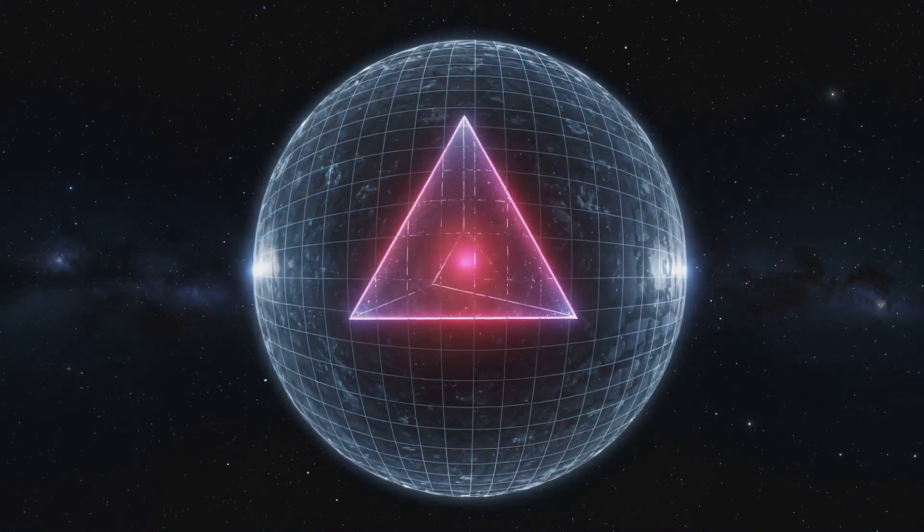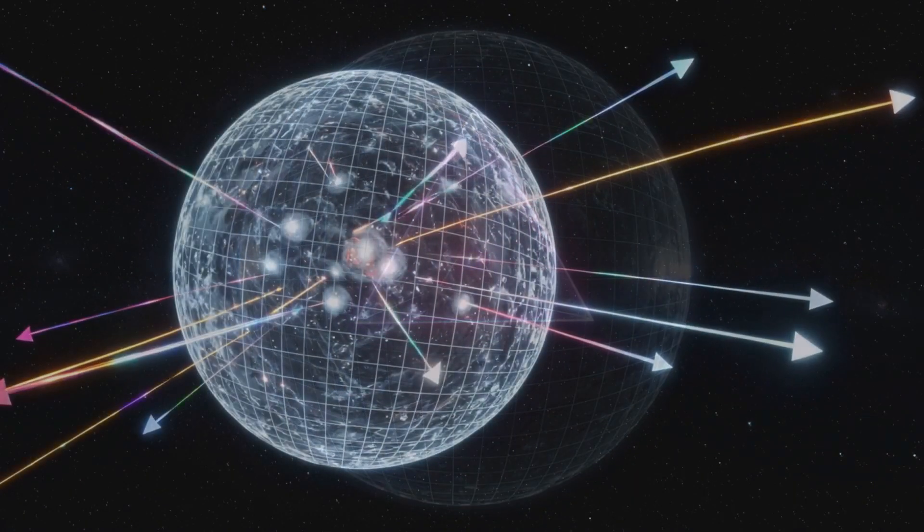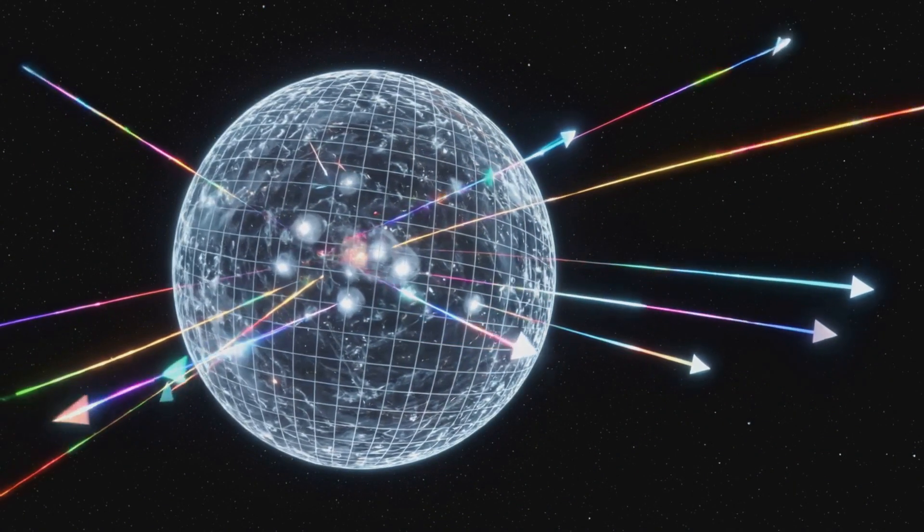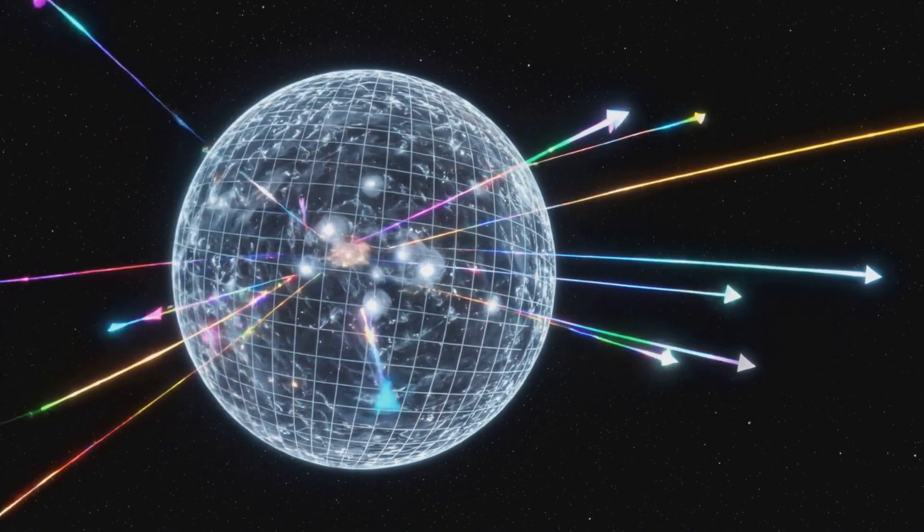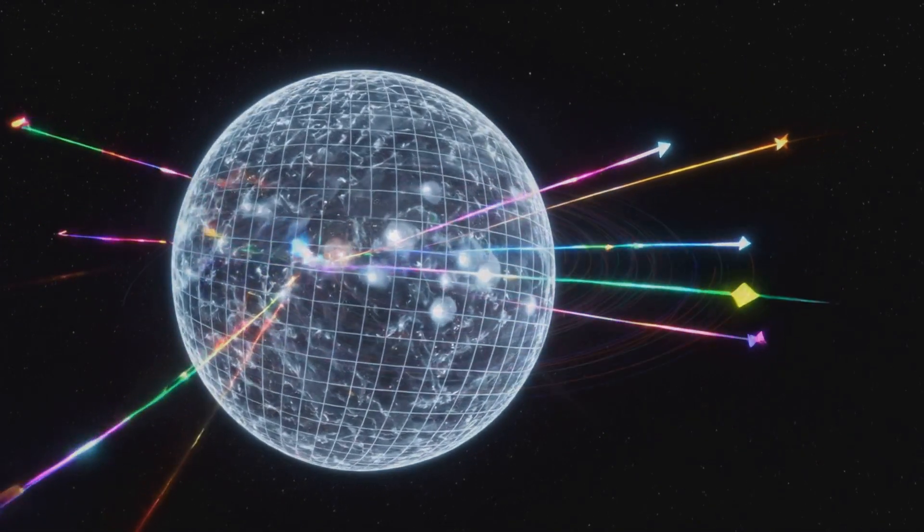Now let's bring it to 3D. The Bloch sphere shows how quantum states move in all directions. When light spins on this sphere, it creates probability. The higher the vector points, the more likely a particle appears as spin-up. Lower down, it's more likely to be spin-down.